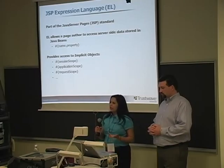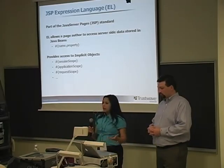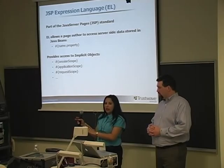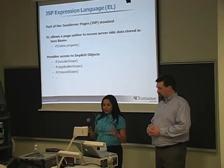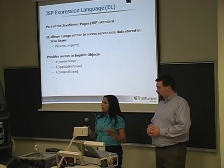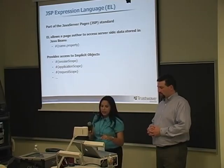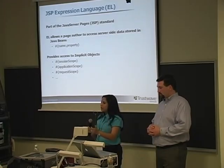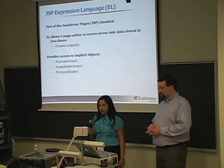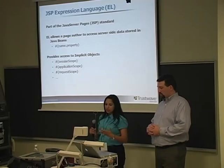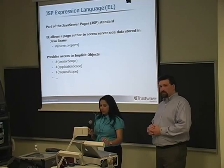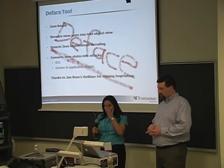Let's go over Expression Language. Anyone who's a JSP developer is probably familiar with it. Expression Language allows a page author to access server-side components and their properties. For example, to access a customer's first name you'd simply write 'customer.firstName' — making something like a 'Hello, welcome back' message very easy. Expression Language also provides access to several implicit objects such as session scope, application scope, and request scope, and we will be using this in our attack.